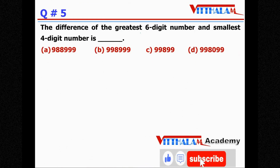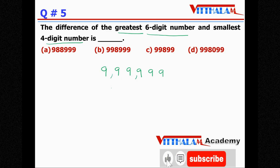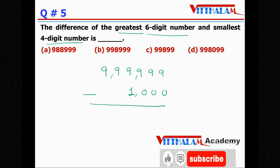Question Number 5: Find the difference of the greatest 6-digit number and the smallest 4-digit number. The greatest 6-digit number is 9,99,999. The smallest 4-digit number is 1,000. The difference is 9,99,999 minus 1,000 equals 9,98,999. Therefore the answer is B.